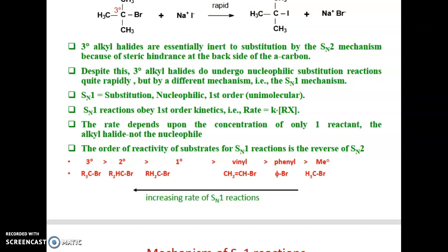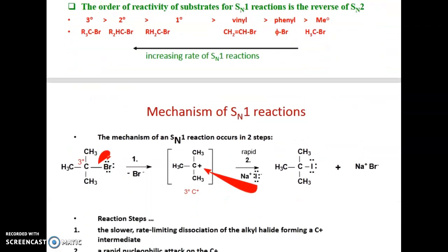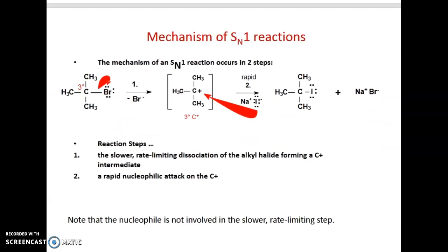SN1 reactions obey first order kinetics. The rate depends only on the concentration of the alkyl halide, not the nucleophile. The order of reactivity for SN1 is the reverse of SN2: tertiary > secondary > primary > vinyl, phenyl, methyl. The mechanism involves formation of a carbocation intermediate followed by formation of the product.